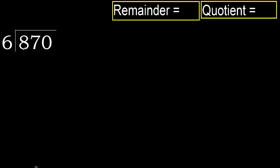870 divided by 6. 8 is not less, therefore with 8: 6 multiplied by which number is nearest to 8 but not greater? 6 multiplied by 2 is 12 — 12 is greater. Multiplied by 1 is 6 — it is not greater.